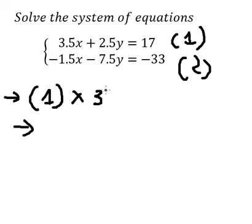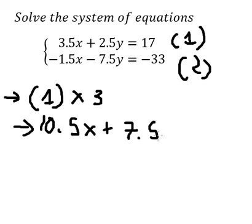3.5 multiplied by three gives us 10.5. This one we have 7.5. This one you got about 51.